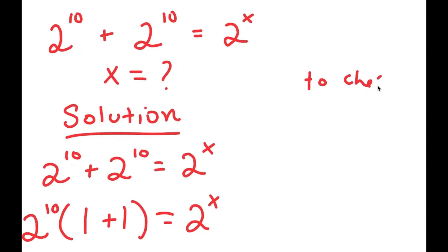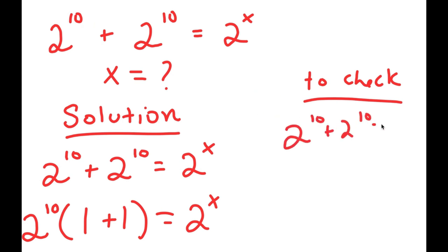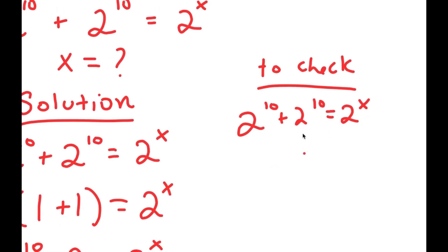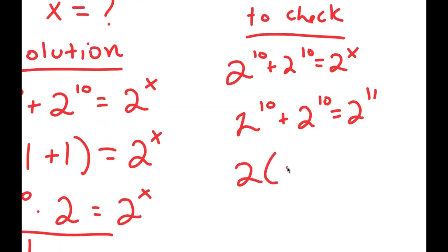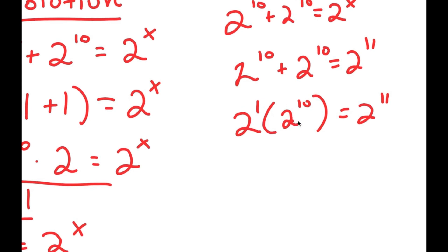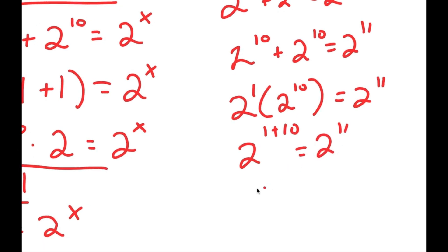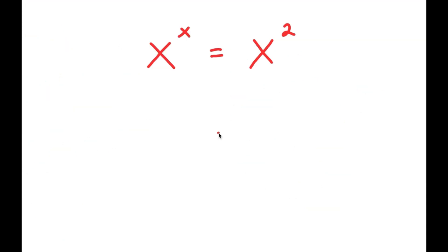Our equation was 2 to the power of 10 plus 2 to the power of 10 equals 2 to the power of x. We got x equals 11, so I get 2 to the power of 10 plus 2 to the power of 10 equals 2 to the power of 11. Two times 2 to the power of 10 is 2 to the power of 1 times 2 to the power of 10, which equals 2 to the power of 1 plus 10, which is 2 to the power of 11. Verified.